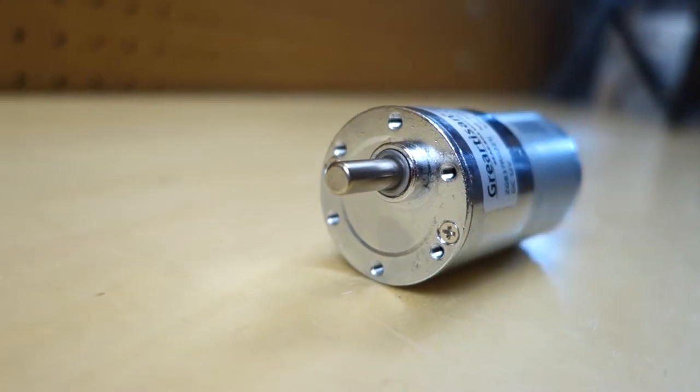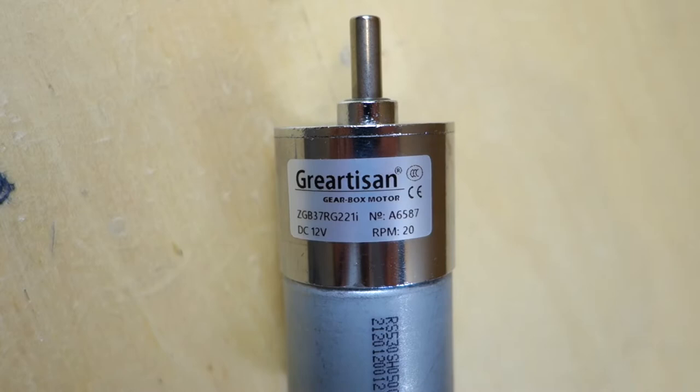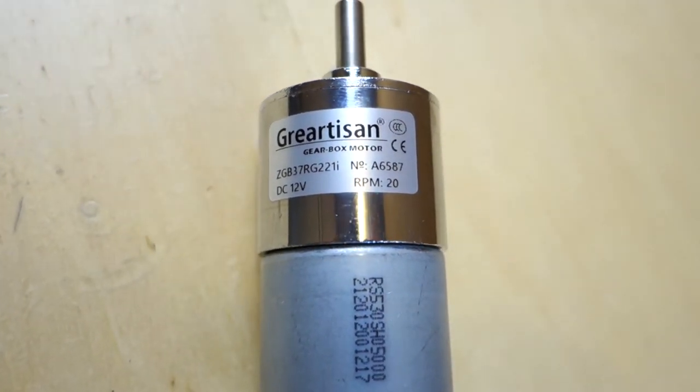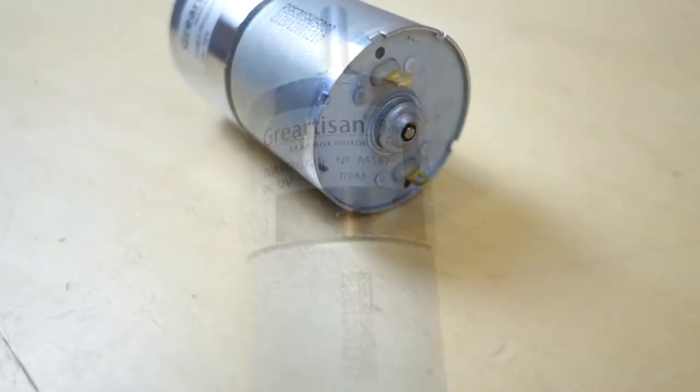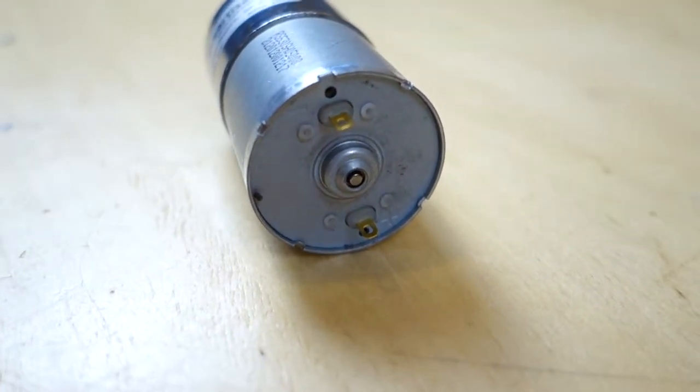Before we begin the coupling design, we need to determine the specifications the coupling needs to meet. Here we have a 12 volt DC high torque motor with a 6 millimeter diameter shaft. It is gear reduced to 20 revolutions per minute speed and rated to 1.5 newton meter torque.